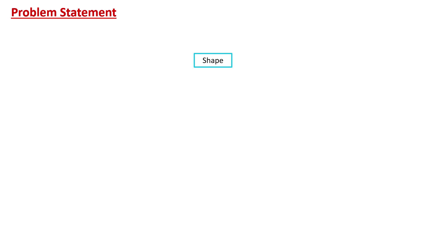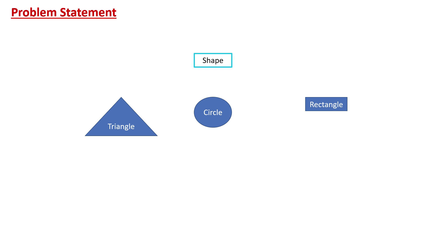Before we go and see what the Decorator Design Pattern actually is, let's see what problem it is trying to solve. To understand this problem, let's assume that we have a shape interface. This shape interface can be implemented by different kinds of shapes. So assume that we have a triangle, a circle, and a rectangle. These shapes can implement this shape interface and create concrete classes.